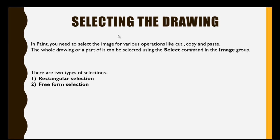There are two types of selections: one is rectangular selection and second is free form selection. The whole drawing or a part of it can be selected using the SELECT command in the image group.